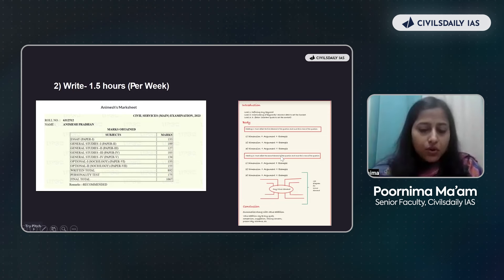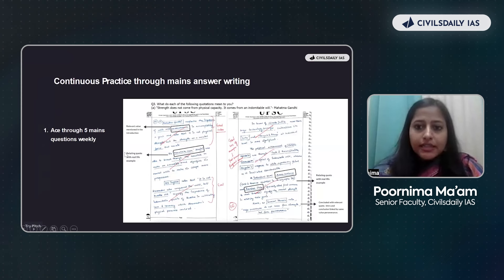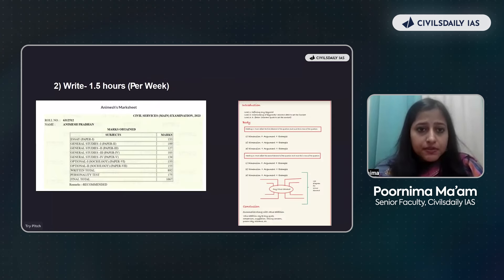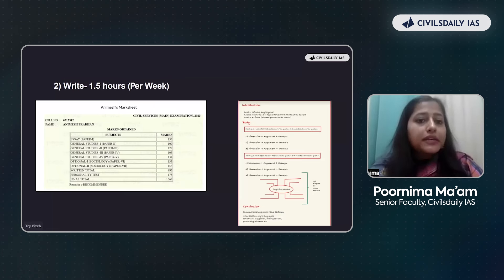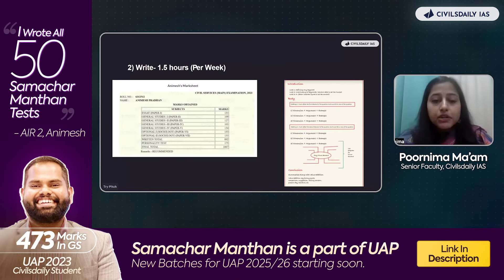You can follow this approach for continuous practice through mains answer writing. We provide five mains questions on a weekly basis. This is the answer copy of Animesh which was checked throughout in Samachar Manthan, and because of his rigorous, thorough, and continuous effort, he could score such good marks in UPSC Mains. We also provide prelims-based questions on a weekly basis, and along with the magazine we attach PYQs if something has been asked previously from that section, plus probable questions that might be asked.